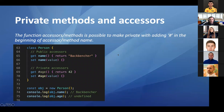Private methods and accessors — a new feature added to classes. By adding a hash (#) at the beginning of a method or accessor name, it becomes private. In the example, a class Person has a public getter 'name' returning 'bigbencher'. When we try to access the private accessor from outside the class, we get undefined instead of the value.